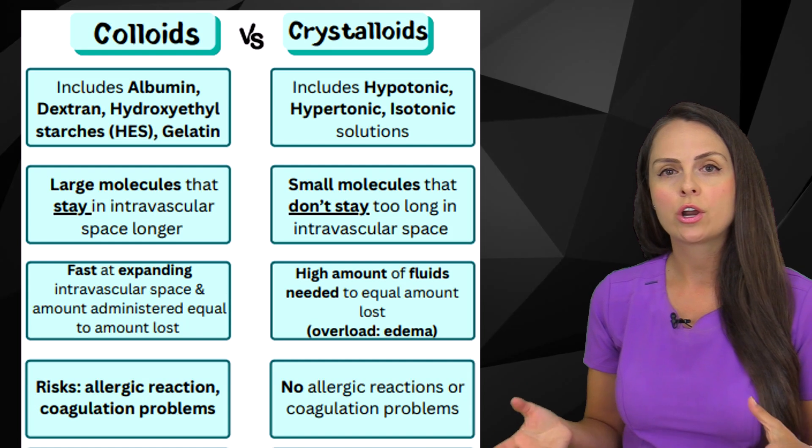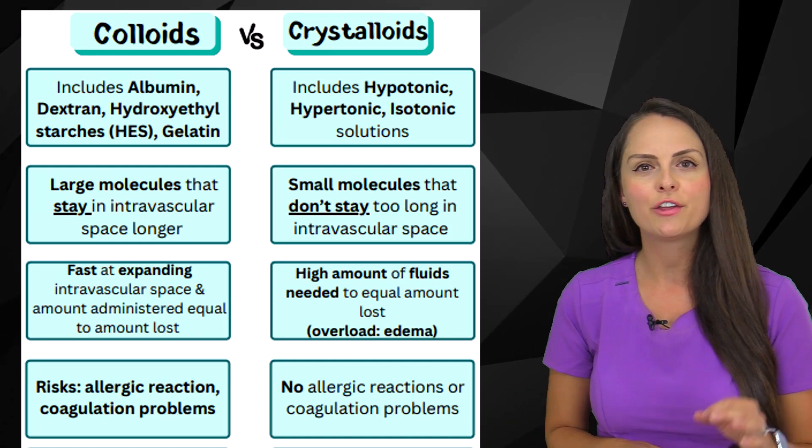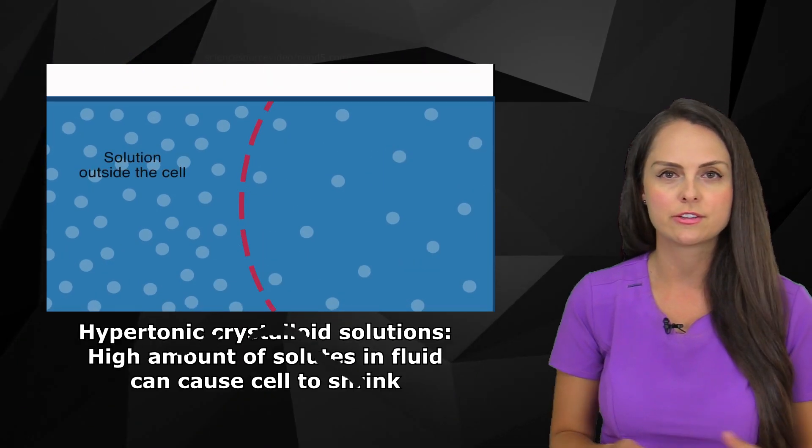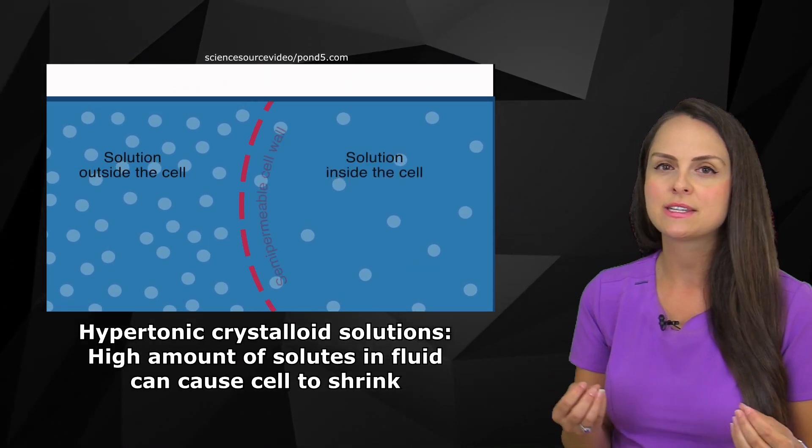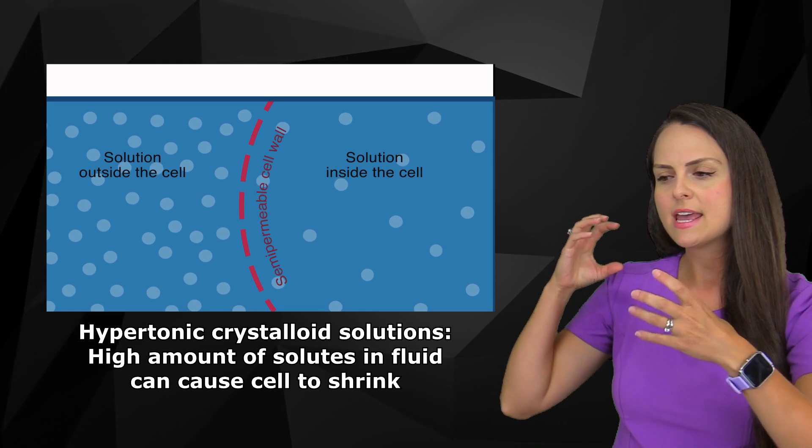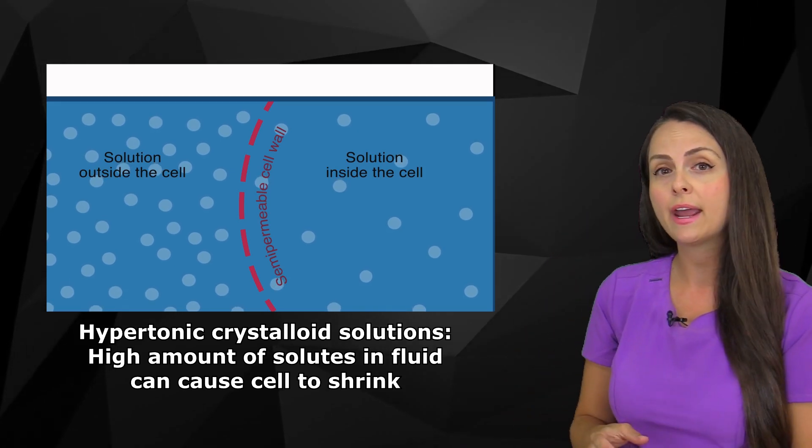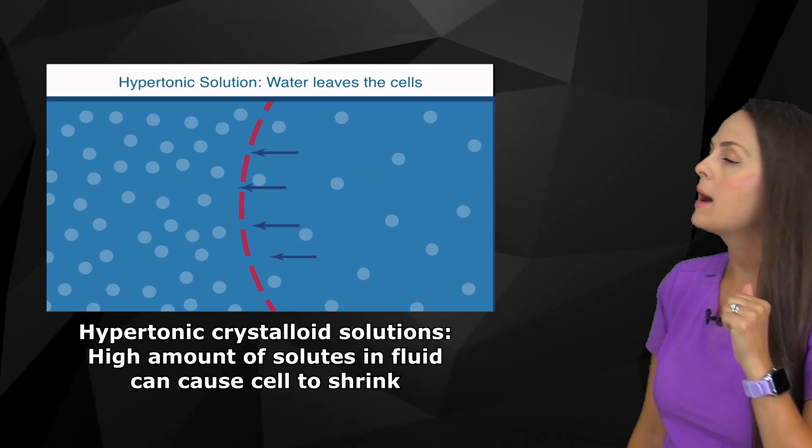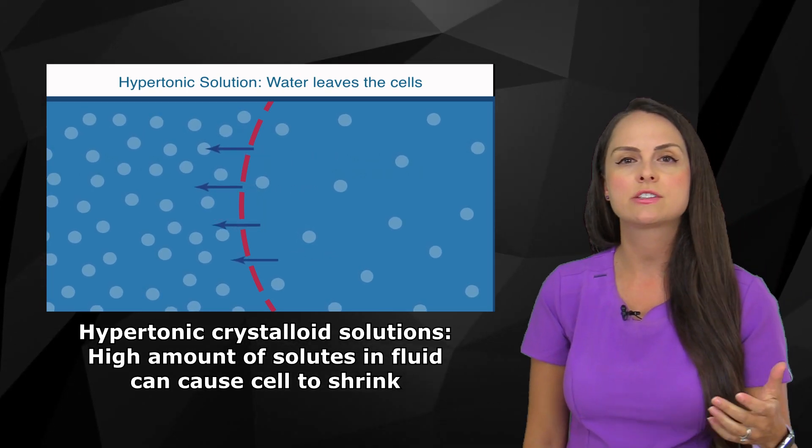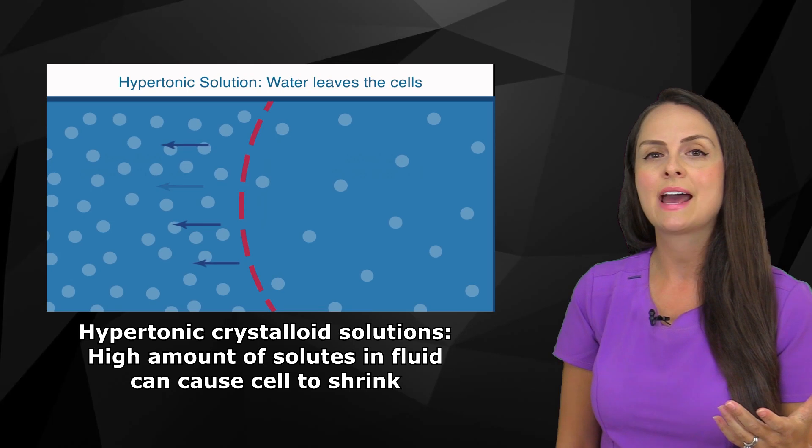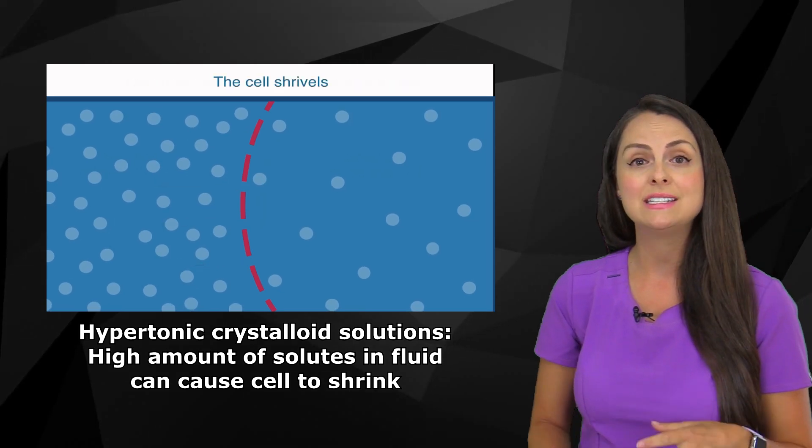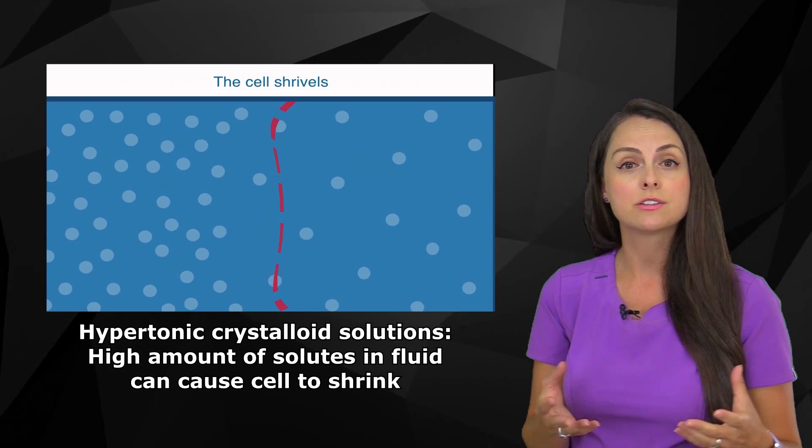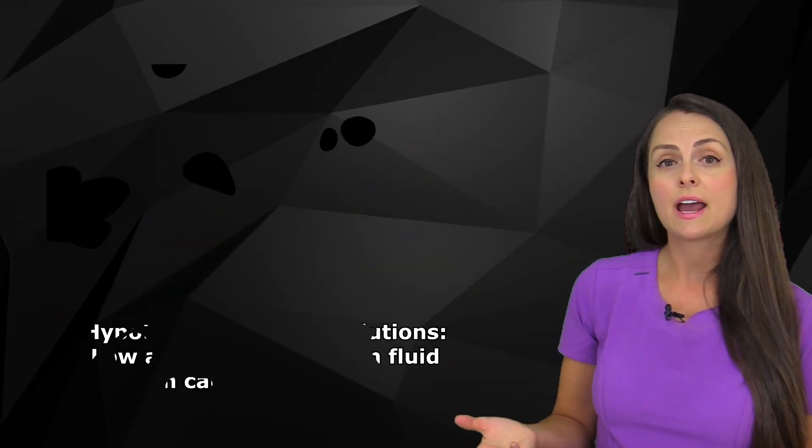And these fluids can work in a variety of ways depending on the tonicity of the bag of fluid. For instance, whenever we're dealing with hypertonic crystalloid solutions, we have a high tonicity. So there's a high amount of solutes in that bag of fluid compared to the tonicity or the osmolarity of your blood plasma. So when we throw a hypertonic solution into that intravascular space, what it can do is that it can pull water from the cells and dehydrate them, which sometimes we need to do that if we have like cell swelling, like with cerebral edema.